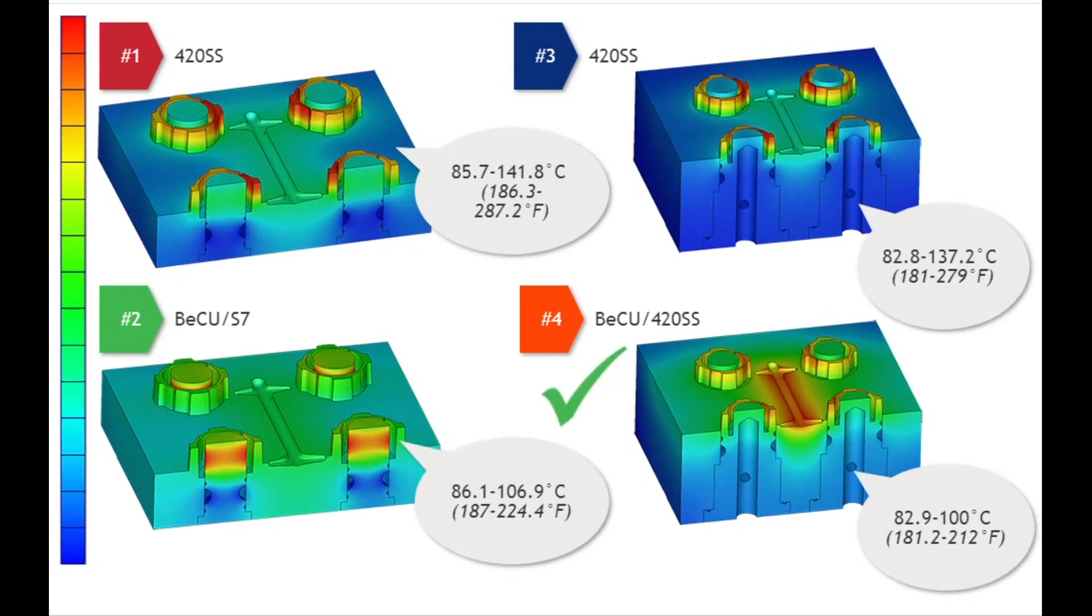For minimizing mold tool steel cost, a combination of 420 stainless steel for the mold base and a high-hardened beryllium copper alloy for the center core could be used.